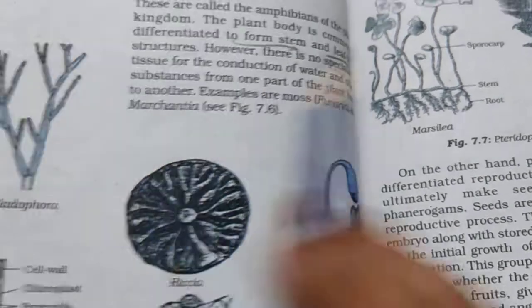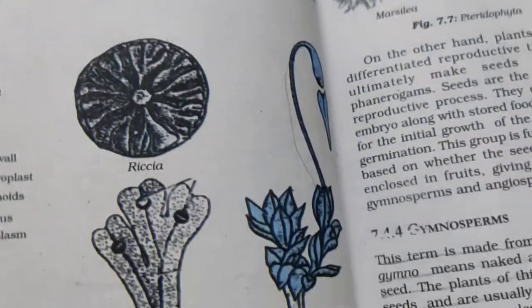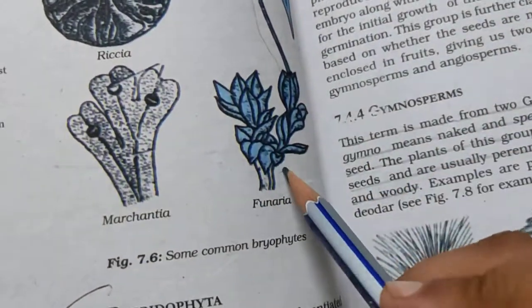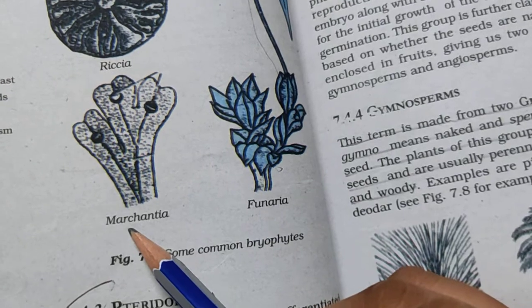Examples of Bryophyta are Funaria and Marchantia. In moist, shaded mountain areas you can easily find them.